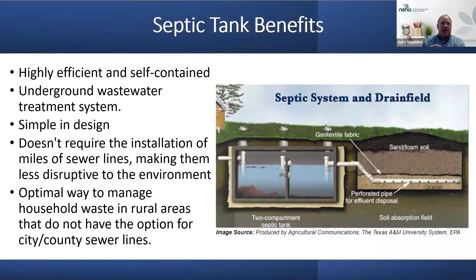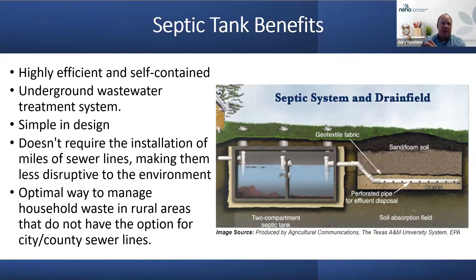Some of the benefits of a septic system: it's highly efficient and self-contained. The tank itself is watertight, all contained within itself, typically underground. Simple in design — it's a tank with anaerobic digestion that spreads liquid out underground and lets the soil do its work. It doesn't require miles of sewer lines. As larger cities expand, sewer system lines may not extend as fast as neighborhoods do. These are an easy, optimal way to manage household waste on site without the high cost of extending sewer lines.